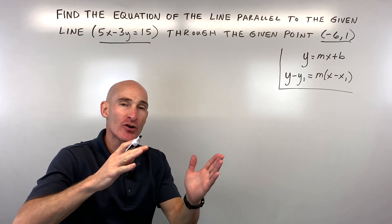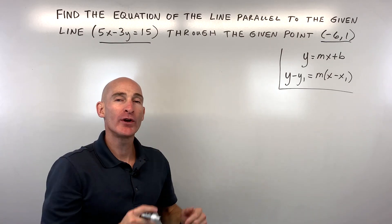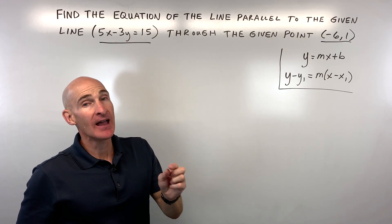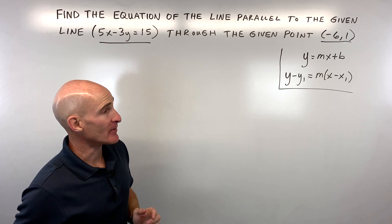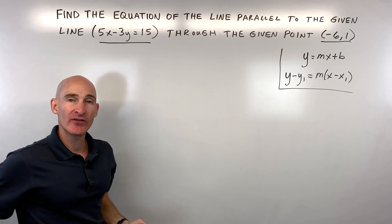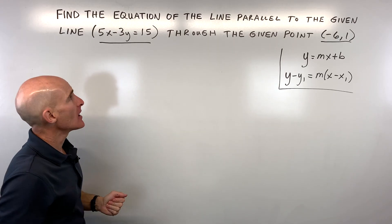Now remember, when lines are parallel, what do you know about their slopes? They're the same because they're going up at the same rate. They'll never cross.